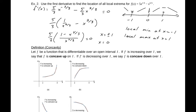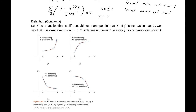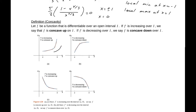Next on the docket is concavity. Let f be a function differentiable over an open interval I. If f' is increasing over I, we say it's concave up. If f' is decreasing over I, we say it's concave down. Looking at examples: if the derivative is increasing, we get a bowl shape facing up. If f' is decreasing, the slope becomes less steep as we go, and we get a bowl facing down. The sign of the second derivative tells us the nuances of the shape — whether the graph is concave up or concave down.